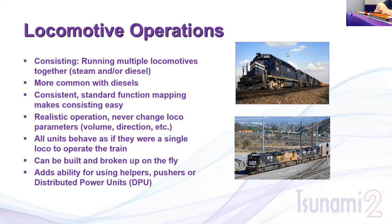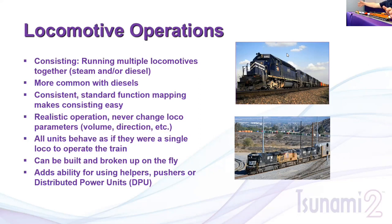For realistic operation, you don't want to change locomotive parameters — having the horn and bell on trailing units requires going in and changing volume levels to zero, and for a rear-facing locomotive you have to change the normal direction of travel. By changing all these parameters, they get stuck together and you can't easily break them up. When railroads consist locomotives, all of them behave as if they were a single unit — typically a crew in the lead unit controls all locomotives in the train, whether as two up front and one in the back as distributed power.